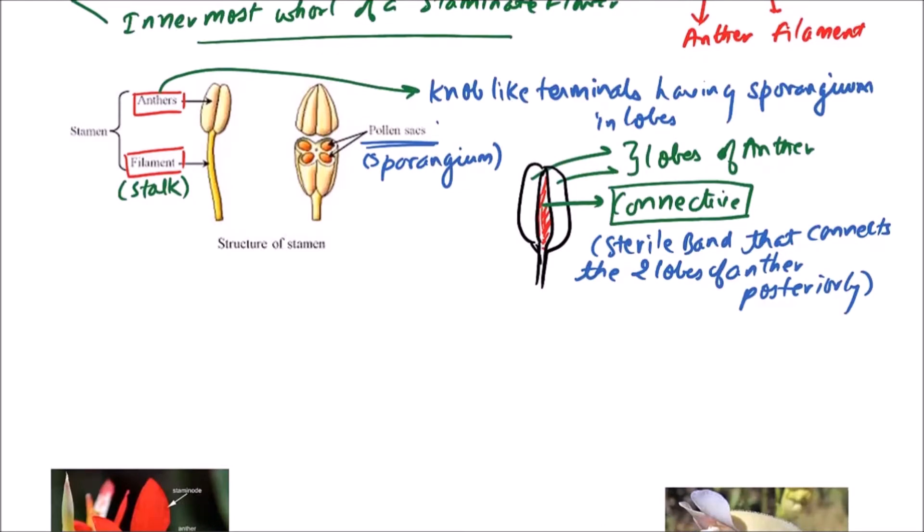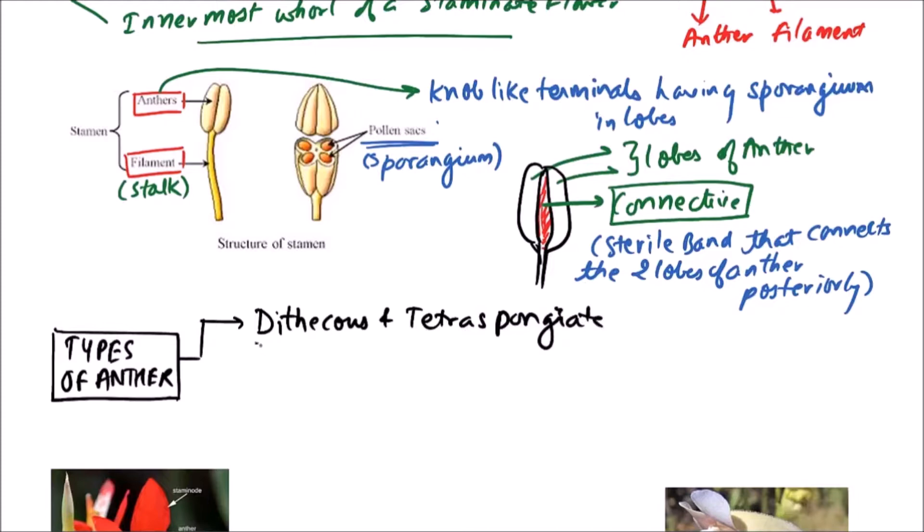Now types of anther on the basis of structure. First one is dithecous and tetrasporangiate. This is a very common type of anther. In this type of anther, two lobes are there and each lobe is having two sporangiums. So two lobes and four sporangium within. That is dithecous and tetrasporangiate. The examples include Dhatura.